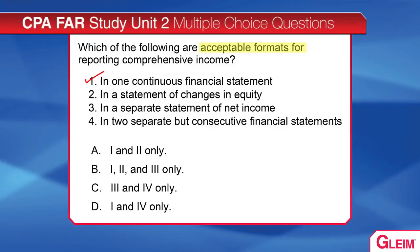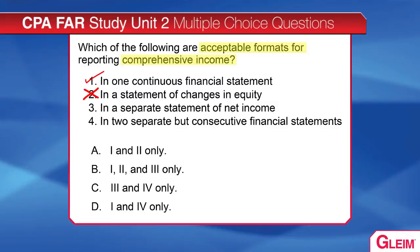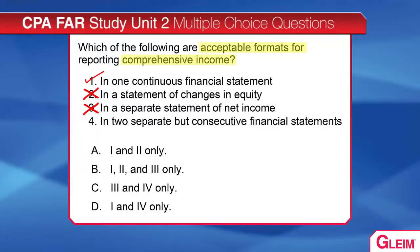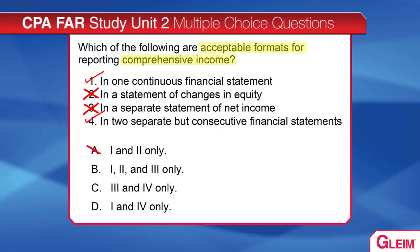Item two says in a statement of changes in equity. Be careful here — you may know that other comprehensive income appears in the statement of changes in equity, but the question asks about comprehensive income. That's not a correct reporting format. Item three says in a separate statement of income — that's also incorrect. Item four says in two separate but consecutive financial statements — that is also correct.